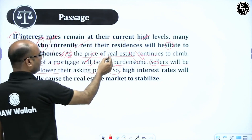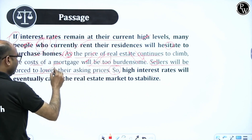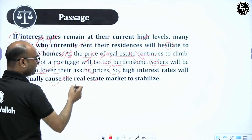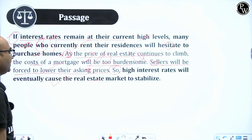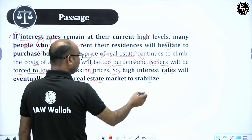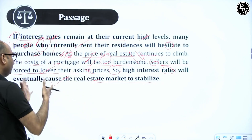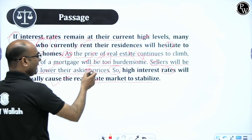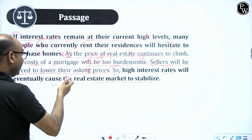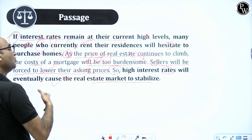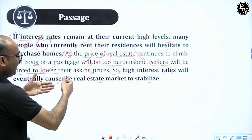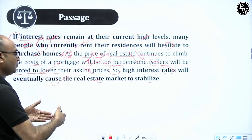In summary for this passage: sentence one is background information, sentence two is intermediate conclusion, sentence three is premise, and sentence four is conclusion. Sellers will be forced to lower their asking price — therefore rates will ultimately cause the market to stabilize. Now let us verify whether our thought process is correct through the options — this will tell us whether we were able to evaluate the passage correctly.